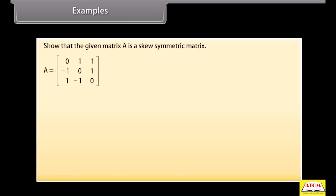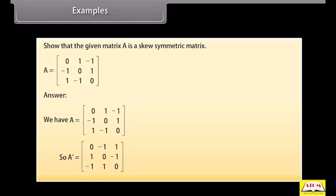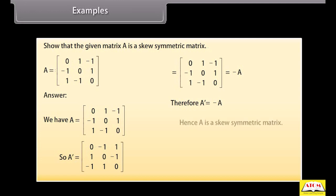Example: Show that the given matrix A is a skew-symmetric matrix. We have given A. So, A transpose has first row 0, −1, 1; second row 1, 0, −1; third row −1, 1, 0. We can see that this is equal to minus A. Therefore A' equals minus A. Hence A is a skew-symmetric matrix.